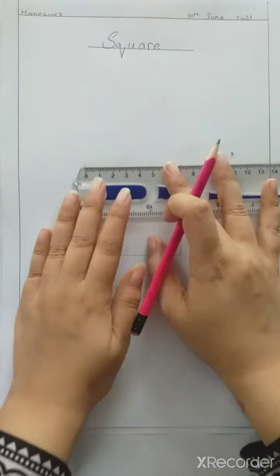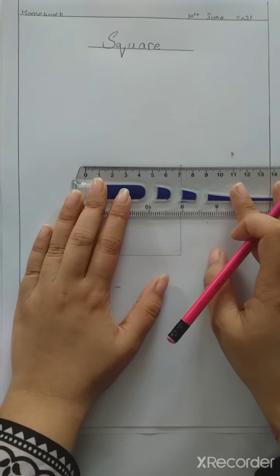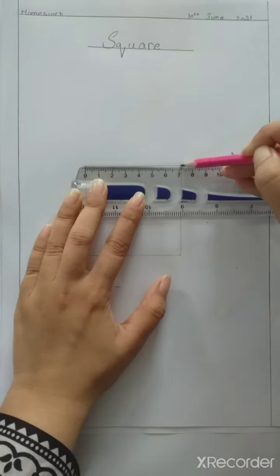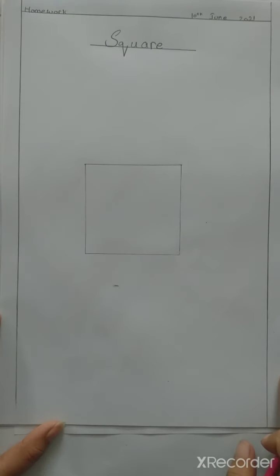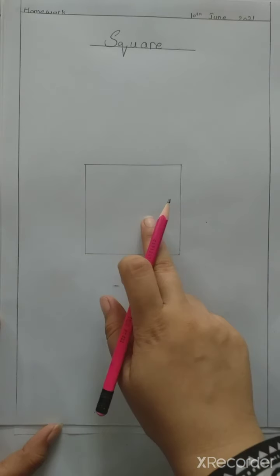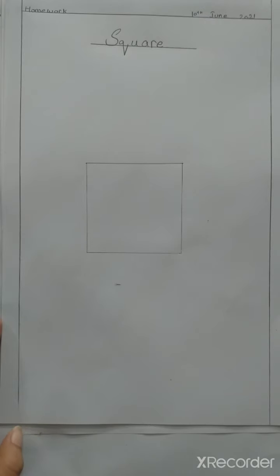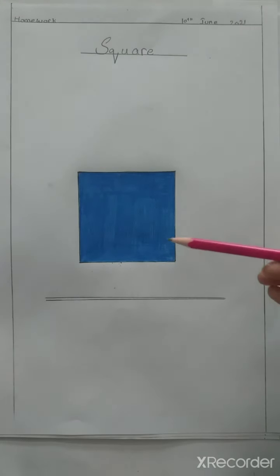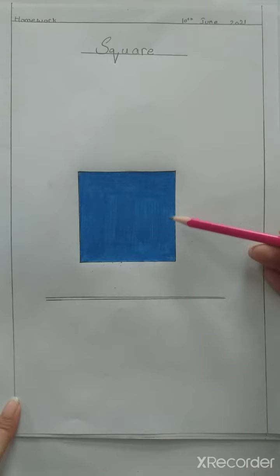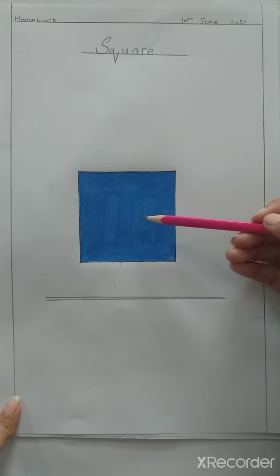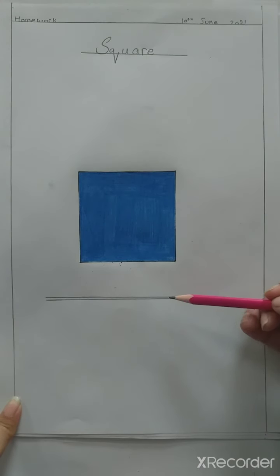Now students, join these lines together. Students, we have drawn the square. Now we will color it — you can use any color you like. Students, we have colored the square. You have to color it carefully so the color does not go outside the shape, and color in one direction.